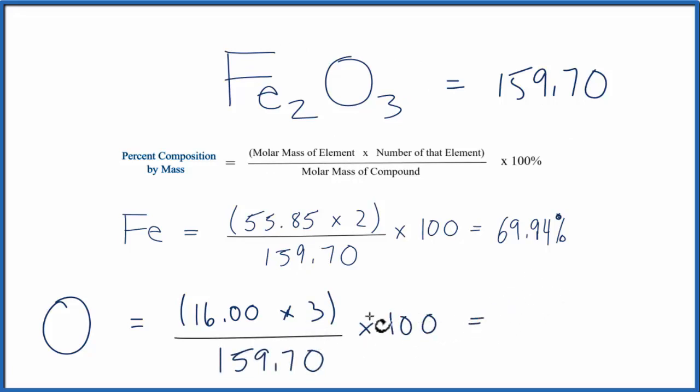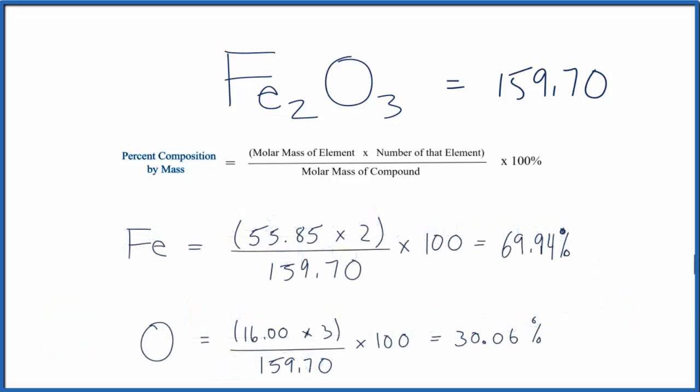we find out that the percentage of oxygen in Fe2O3 is 30.06%. We add these up, should be 100, or very close, and there you have it, the percent composition for each element in Fe2O3.